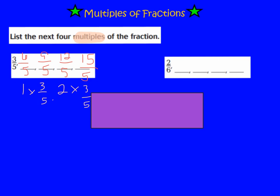Let's look at our next fraction. We need to list the next 4 multiples of 2/6. I'm going to skip count by 2/6, looking at my numerator, which is 2, so numerators need to skip count by 2s. My denominators stay the same, which is 6. The multiples of 2/6 are: 4/6, then 6/6 — which is also equal to 1 whole — then 8/6, then 10/6.